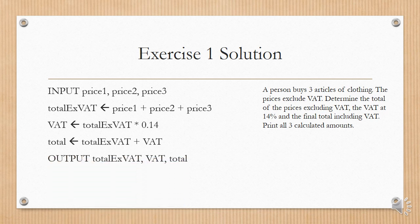And we output total excluding VAT, VAT, and total. It's quite a straightforward solution. You can see that you just go step by step through the question, and then put each bit of the question into the algorithm. This was quite a simple question.